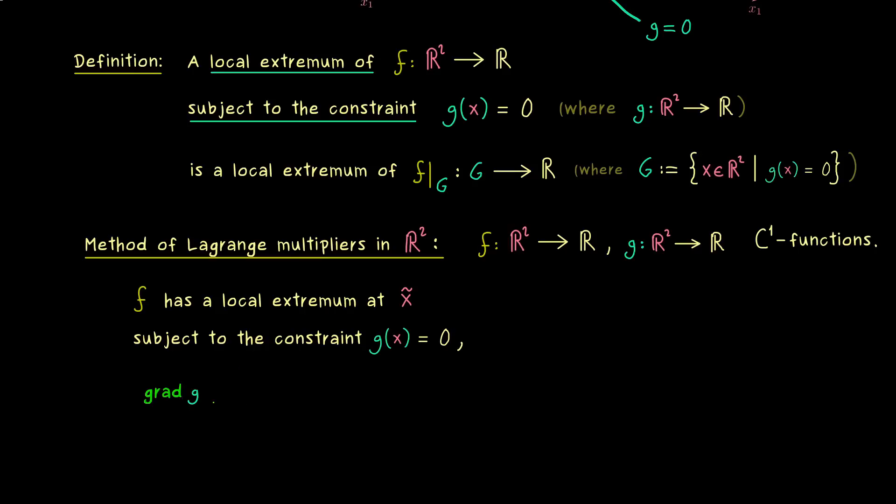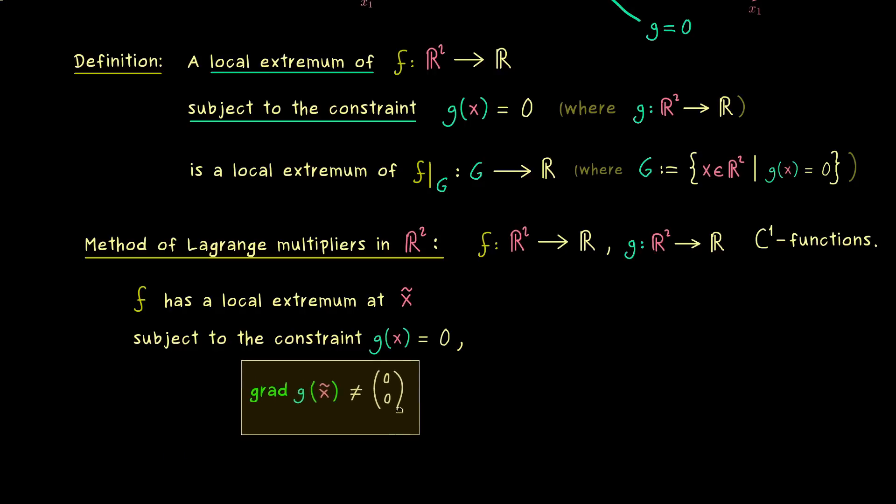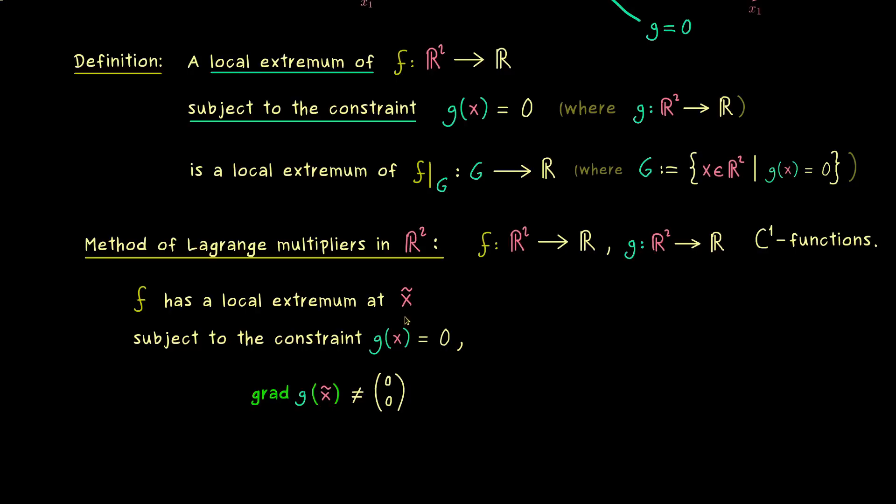But moreover, we need to add a second condition here, because the gradient of g should span a whole subspace. Which simply means, it is not allowed that the gradient of g at the point x̃ is the zero vector. Because in this case, it would not span a one-dimensional subspace. So in other words, this means that the contour line given by g = 0 is well-behaved at x̃. This is really important, we really need this second condition here.